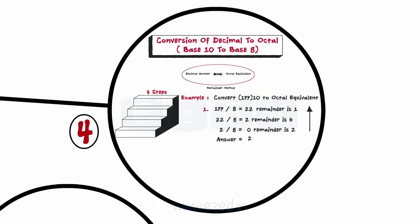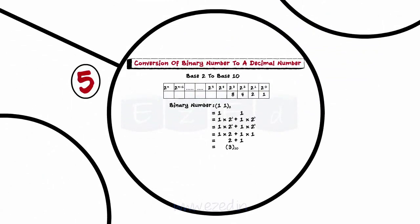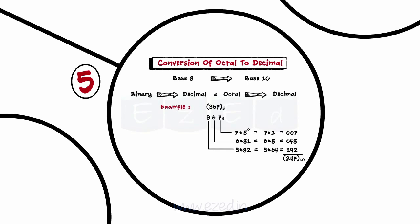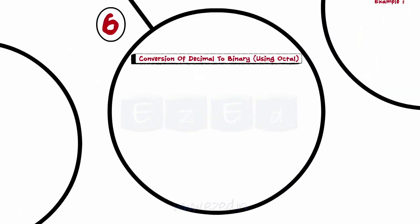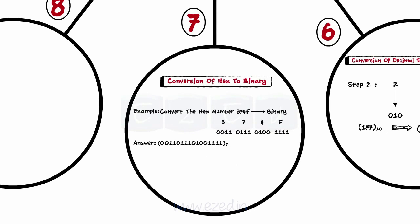Conversion from decimal to any other number system is done using the remainder method. Conversion from binary to decimal is done in two steps: 1. Represent the weight of each digit using the table. 2. Add up all the powers after multiplying by the digit values 0 or 1. Conversion from octal to decimal follows the same two steps. To convert an octal number to binary, represent each octal digit into a 3-bit binary representation. Conversion from hexadecimal to decimal also follows the same two steps. To convert hex to binary, convert each hexadecimal digit into a group of 4 binary digits.